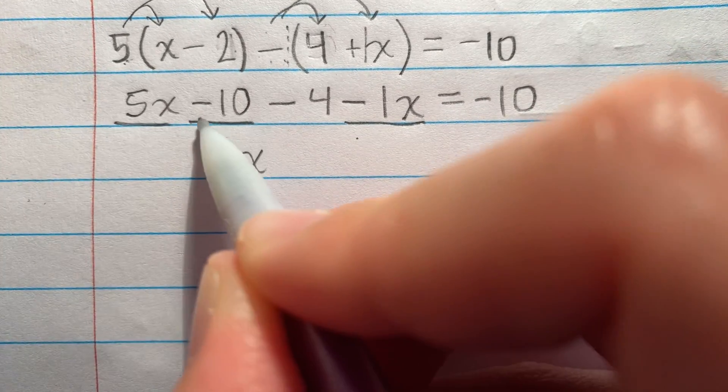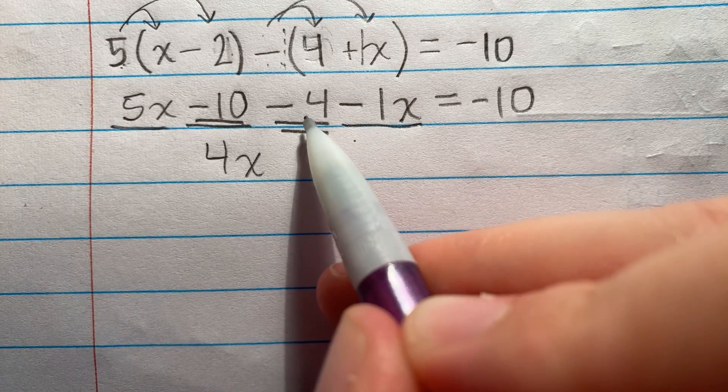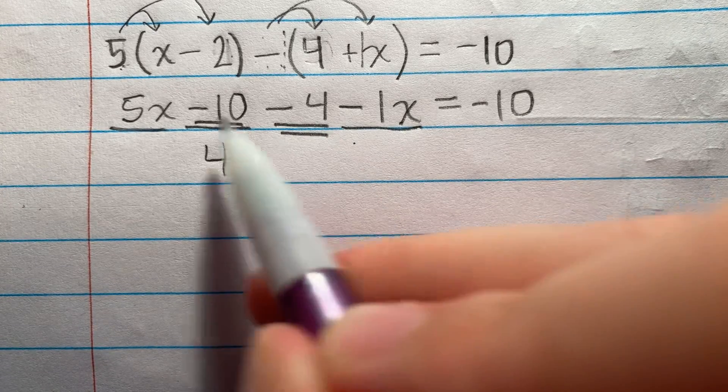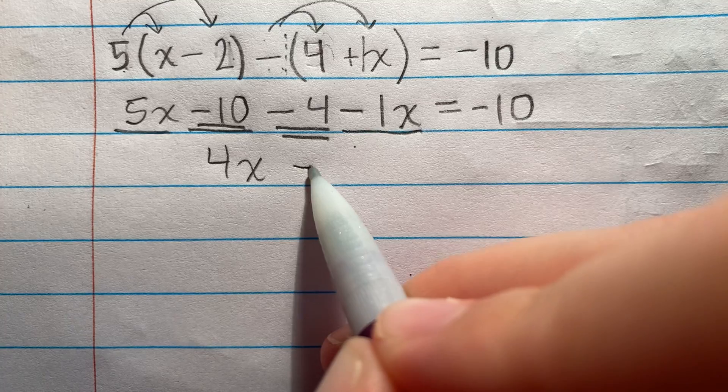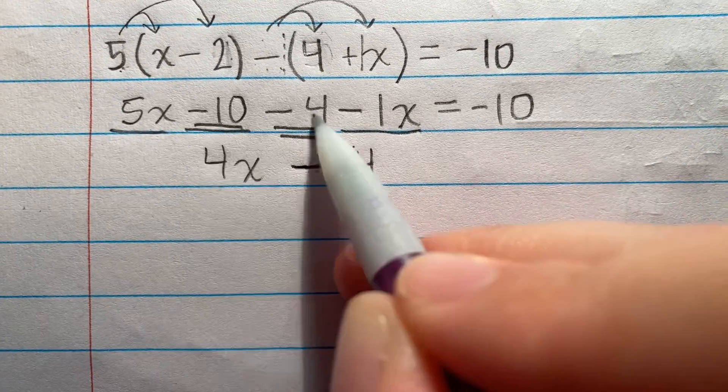Now this is negative 10 minus 4. I have 10 holes in my boat and another 4 holes in my boat. You know what I have? A bunch of holes, right? I have no patches to patch it with. So I have 10 holes plus another 4 holes. I have lots of holes, negatives. I have 14 of them. 10 and another 4.